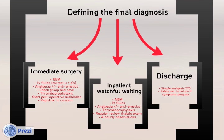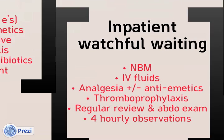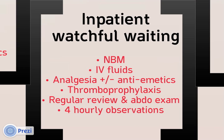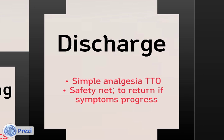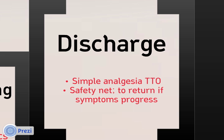For the junior on the ward, patients can be divided into three groups. Those for immediate surgery should be managed as indicated and started on perioperative antibiotics. Those for inpatient watchful waiting need regular review and abdominal examination. And those for discharge need to be given pain relief and adequate safety net advice.